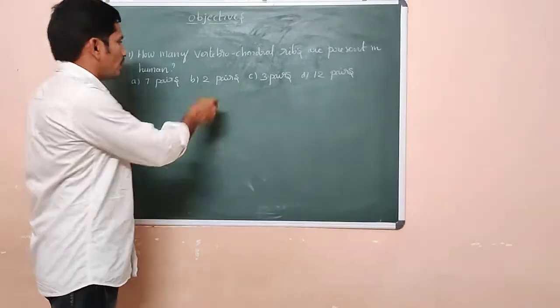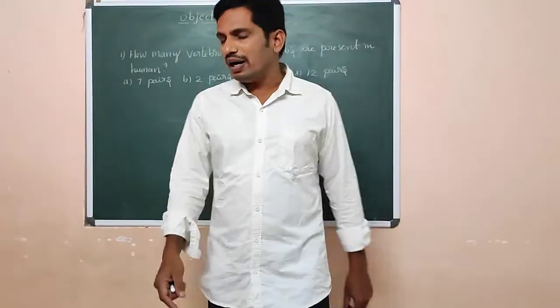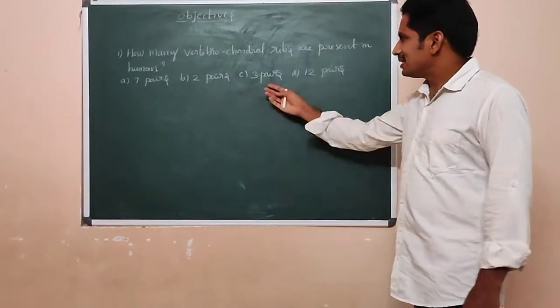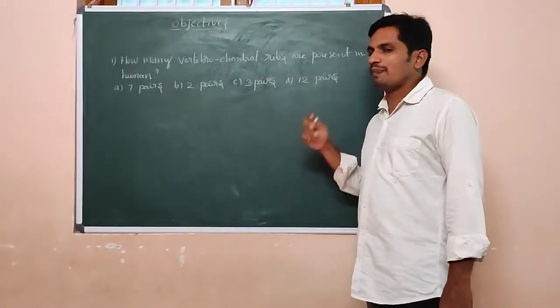Option A is 1 pair, option B is 2 pairs, option C is 3 pairs, and the last option is 4 pairs.